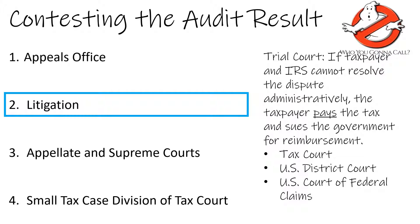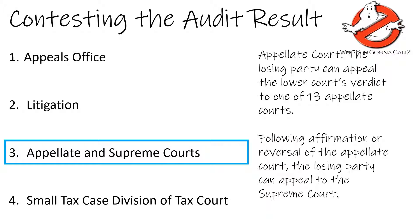The first is tax courts — while this is a smaller organization, they have specific tax expertise. You'll have an easier time getting in and out of tax court, but you might not find a sympathetic audience since they know the tax law. Your second option is the U.S. District Court, and the third is the U.S. Court of Federal Claims, which is headquartered in Washington, D.C. The losing party can appeal the lower court's verdict to one of the 13 appellate courts in the nation.